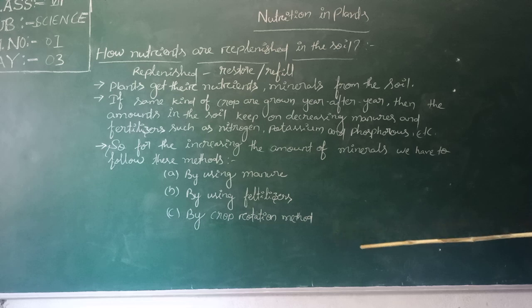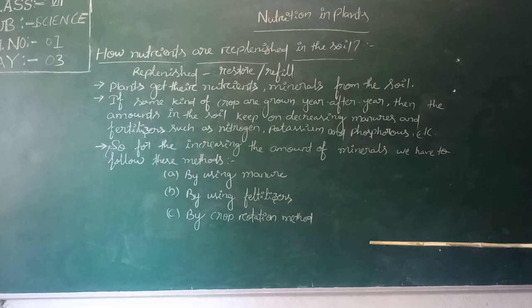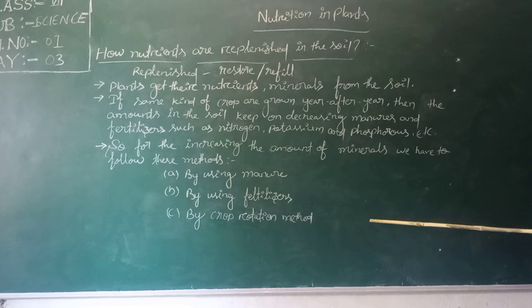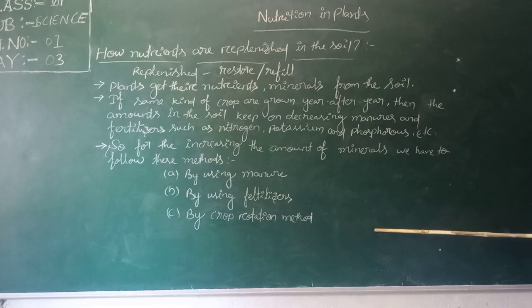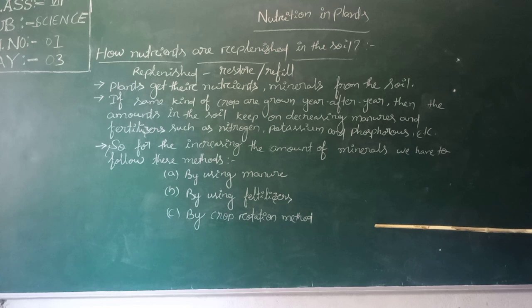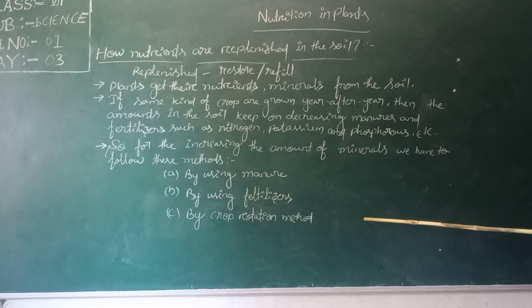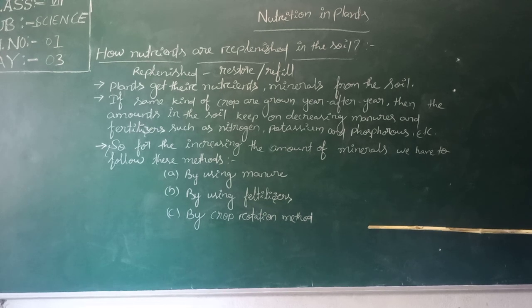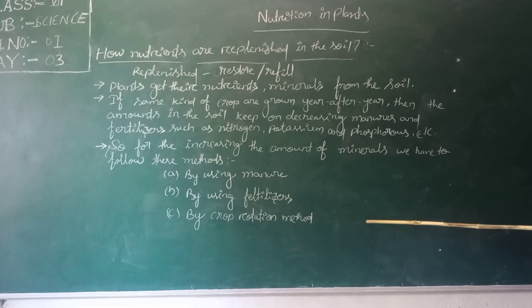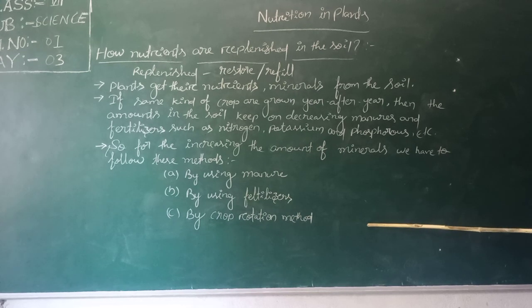The crop rotation method means: suppose in a field we are growing paddy, then next we grow leaf vegetables, cauliflower, or other crops like maize, wheat, or legumes. When paddy requires carbon dioxide and peas require nitrogen, growing different types of crops repeatedly ensures the field provides only what each plant requires, so no nutrients are wasted.